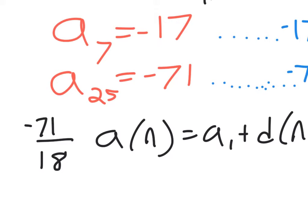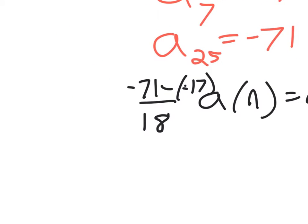So we've got negative 71 subtracted by negative 17. That's the common difference. Subtracting a negative means we're actually adding, so we've got negative 54 over 18. 18 goes into 54 three times. So we've got negative 3 as our common difference.